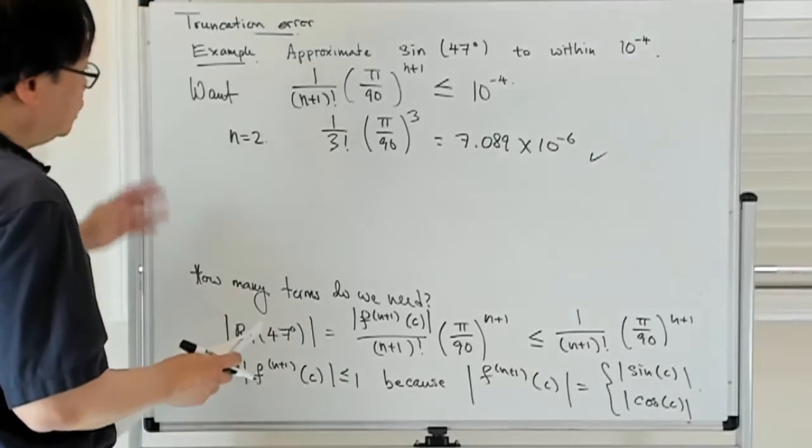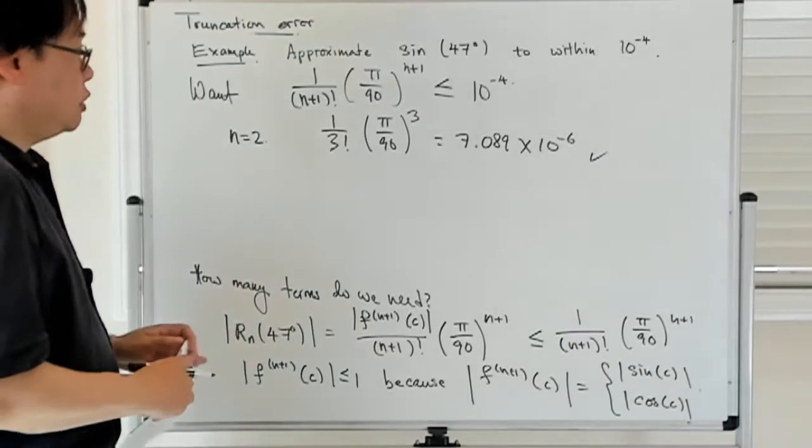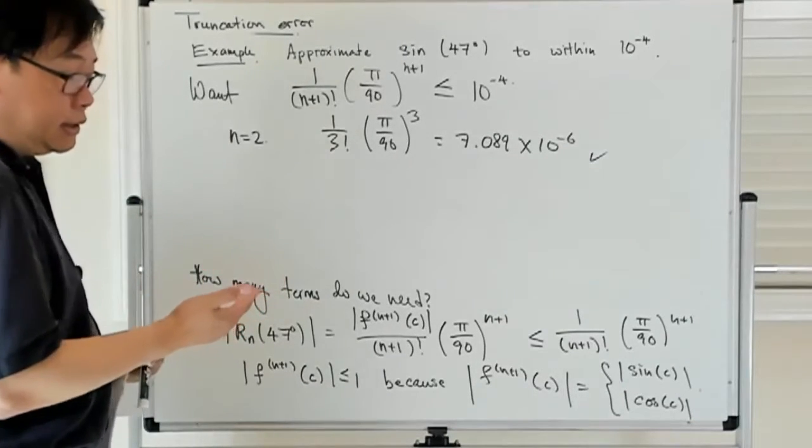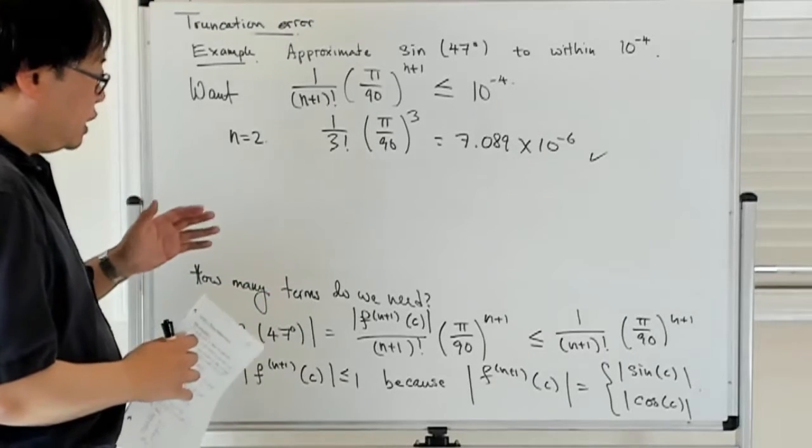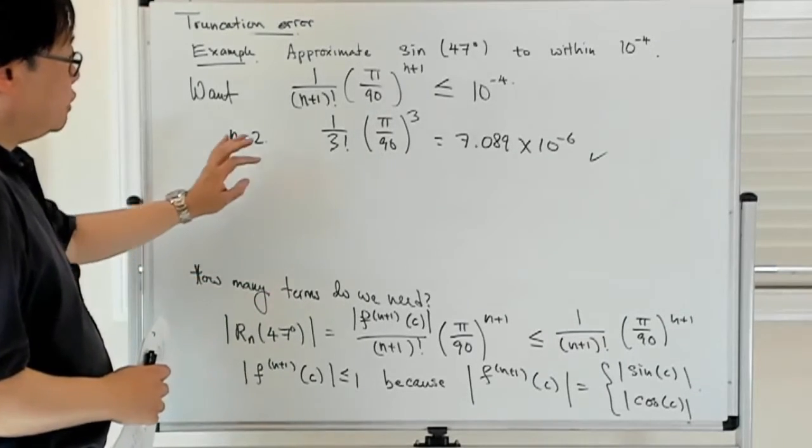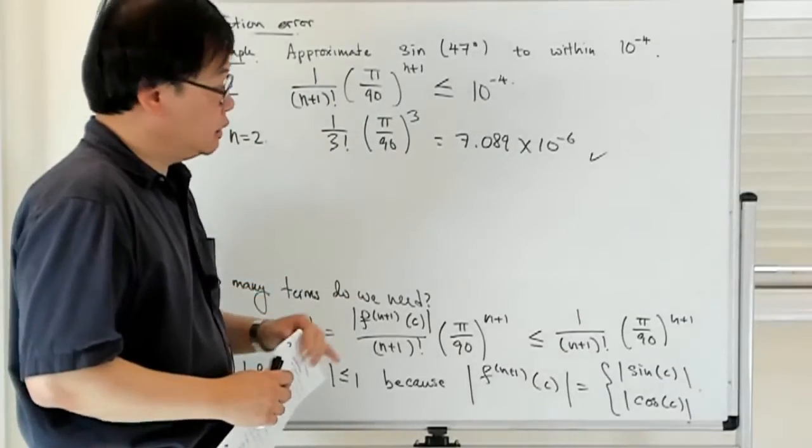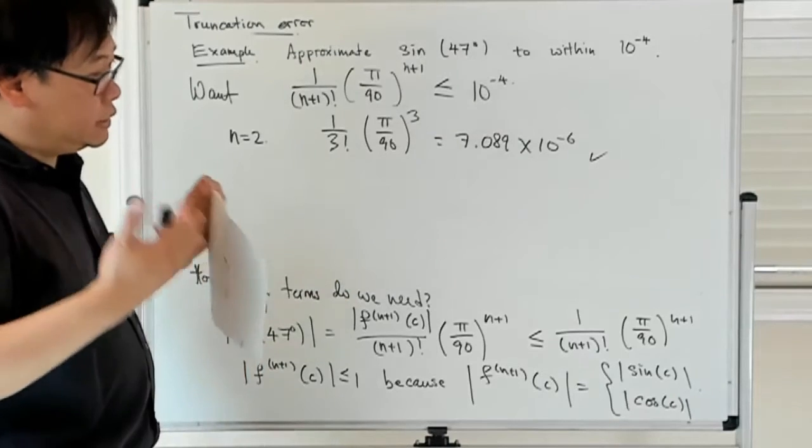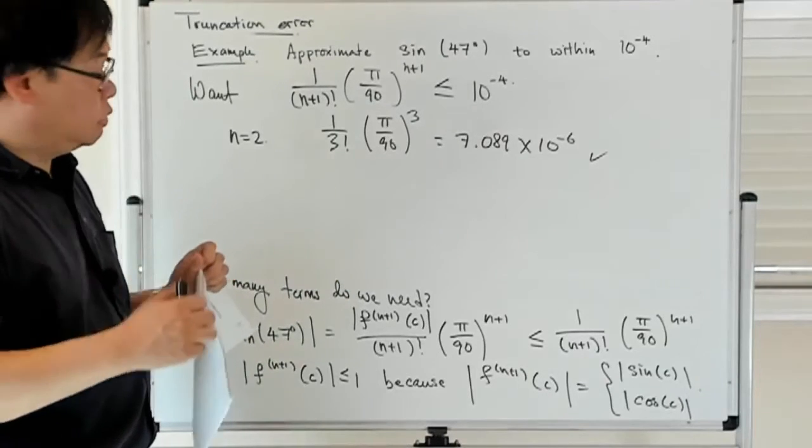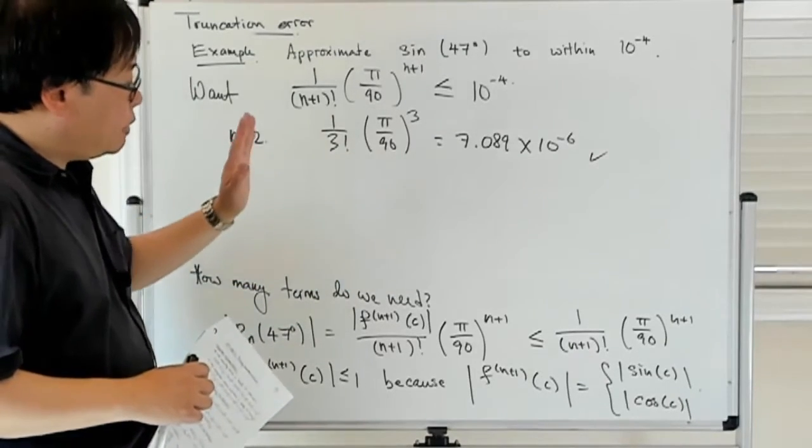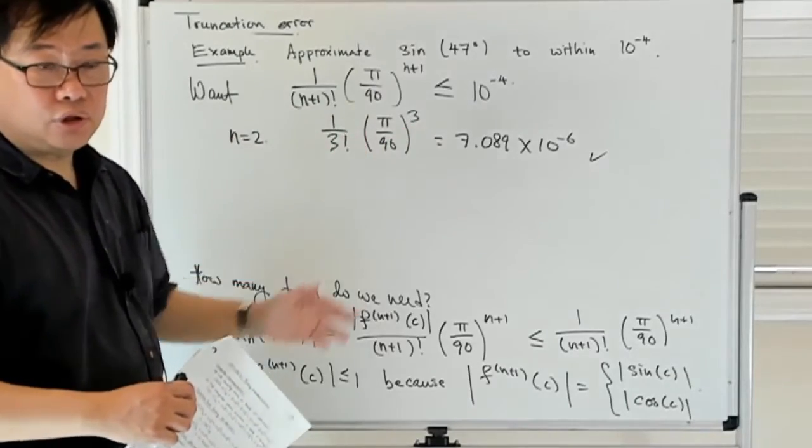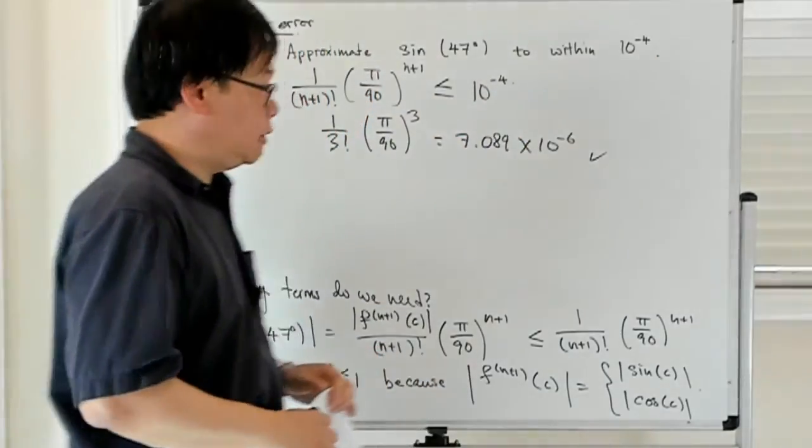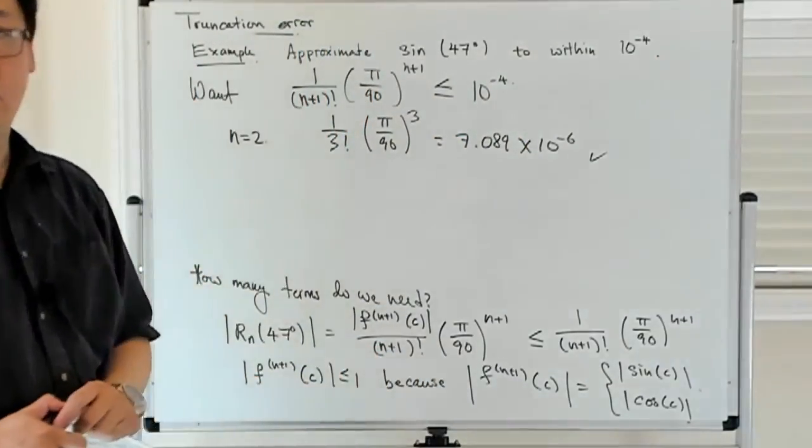So that's just an example of how you could apply the Taylor remainder theorem to establish an upper bound to the truncation error, which you achieve by replacing some function by its Taylor polynomial. And that sort of tells you a way of figuring out how many terms you need to have in order to be accurate to within your prescribed accuracy level. Let me just stop here for now. Thank you.